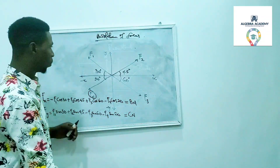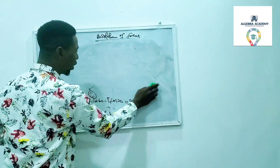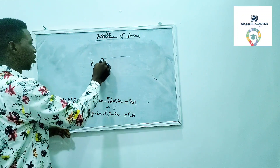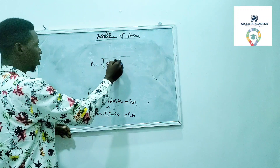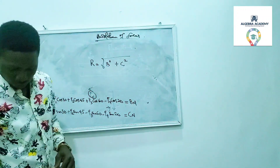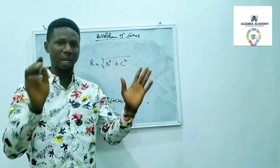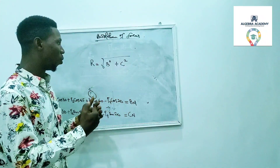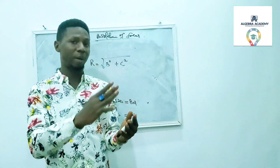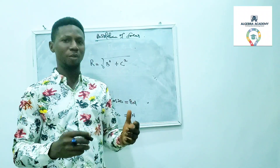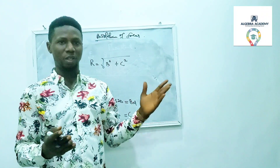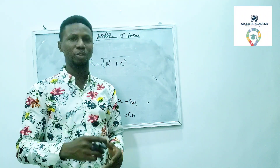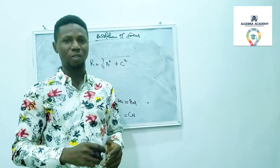We have now resolved all forces and combined them into just two resultant components. To find the final resultant: R = √(B² + C²). That is how to find the resultant of coplanar forces all acting at the same point. We have covered: forces in the same direction, forces in different directions, forces inclined at an angle, and coplanar forces. Next, we will move to unit vectors. Please subscribe and turn on notifications so you'll be notified when that video drops. Thank you.